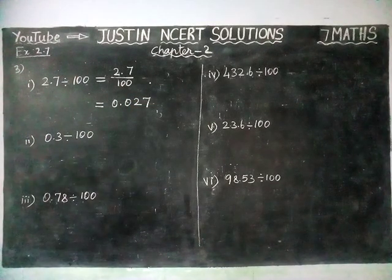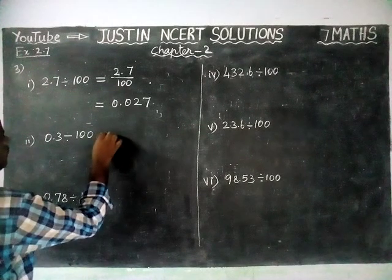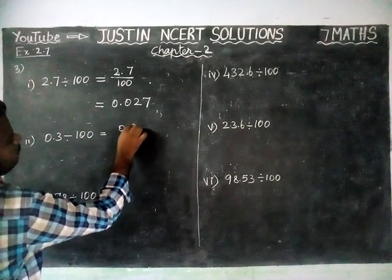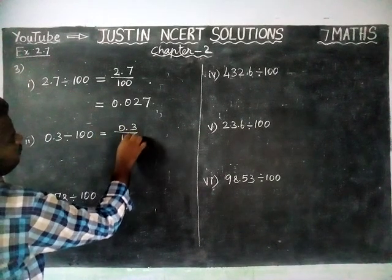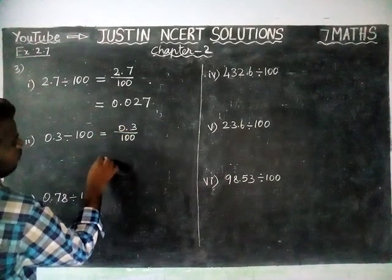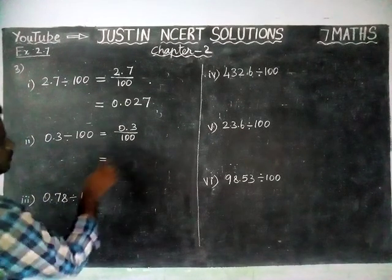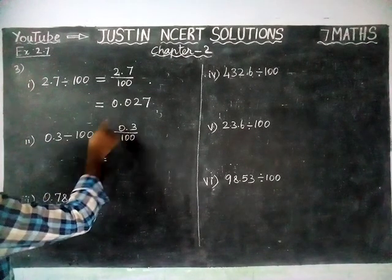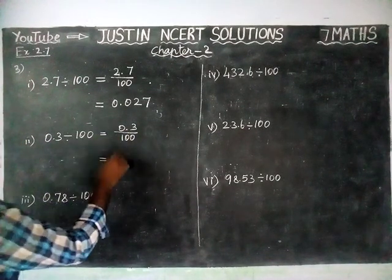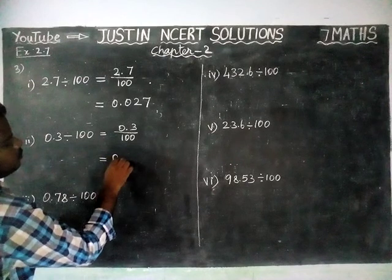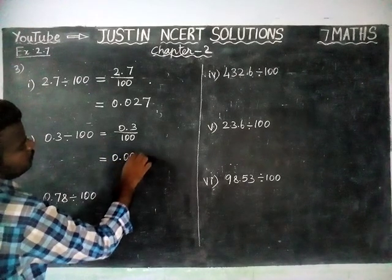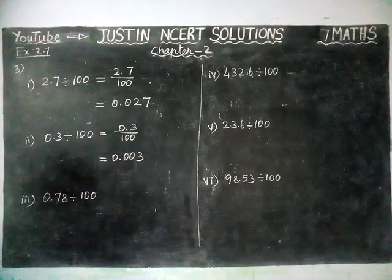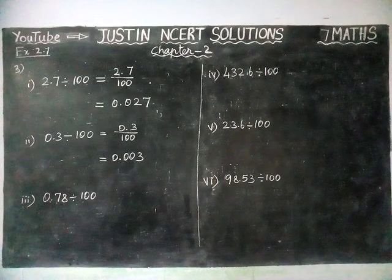Second question: 0.3 divided by 100. We have two zeros, so we have to move two steps to the left-hand side. The answer is 0.003.